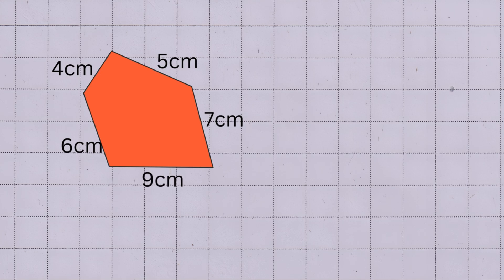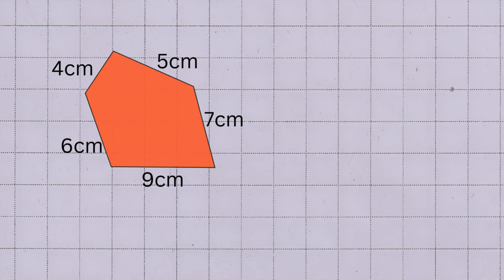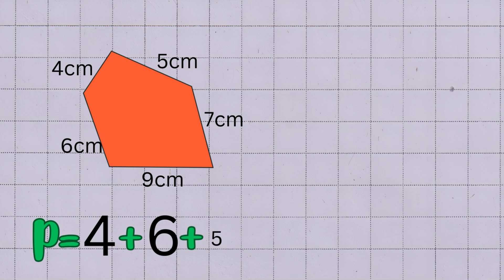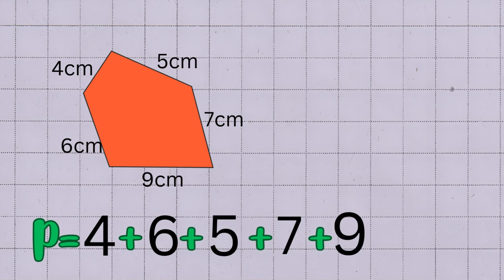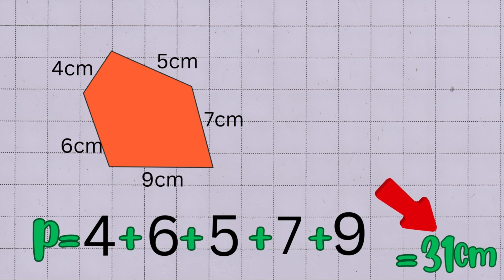To find the perimeter, we add all five side lengths together. When we add four centimeters, six centimeters, five centimeters, seven centimeters, and nine centimeters, the total is 31 centimeters. So the perimeter of this irregular pentagon is 31 centimeters.